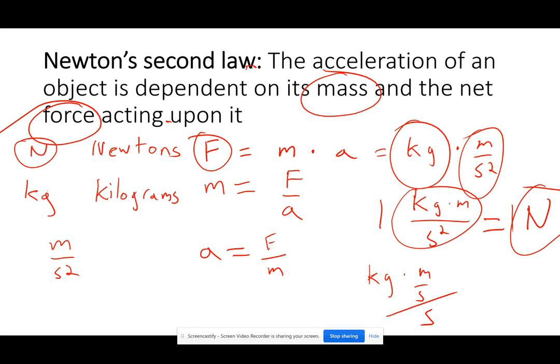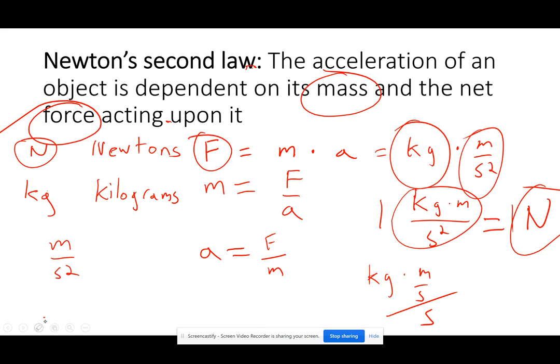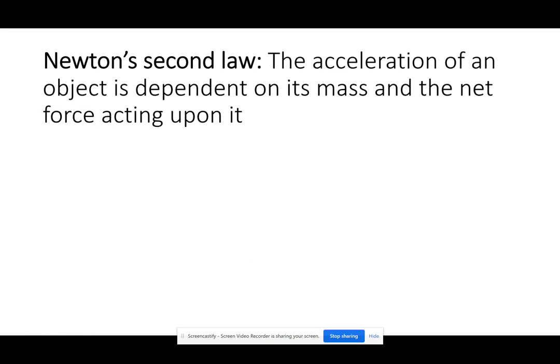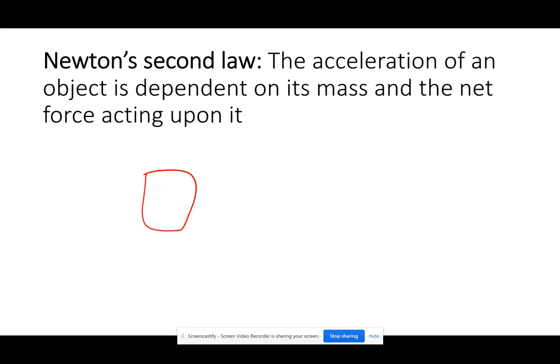I want to point out that a constant force is not necessary for constant motion. We already saw that if we put a force on something and there's no opposing force — in a frictionless environment or in outer space — it will just keep going. We can apply that force, take it off, and the object will keep moving. We don't need to constantly apply force to have constant motion.